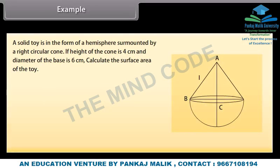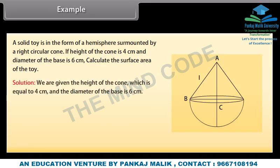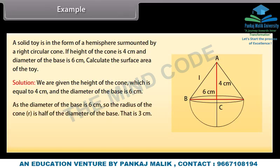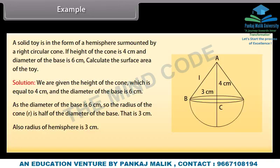Example: A solid toy is in the form of a hemisphere surmounted by a right circular cone. If the height of the cone is 4 cm and the diameter of the base is 6 cm, calculate the surface area of the toy. Solution: We are given the height of the cone = 4 cm and diameter of the base = 6 cm. So the radius of the cone R = 3 cm. Also, the radius of the hemisphere is 3 cm. To find the surface area of the toy, we need the curved surface area of the cone and curved surface area of the hemisphere.